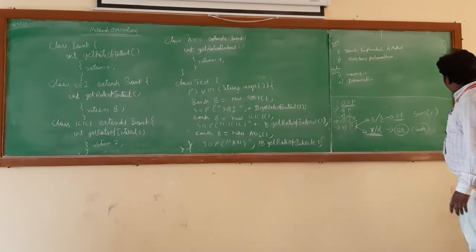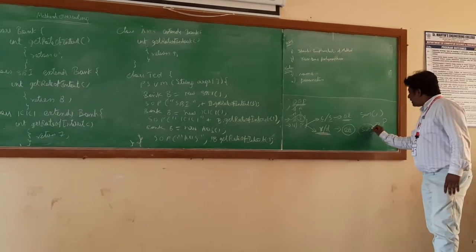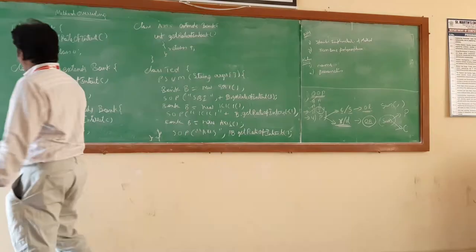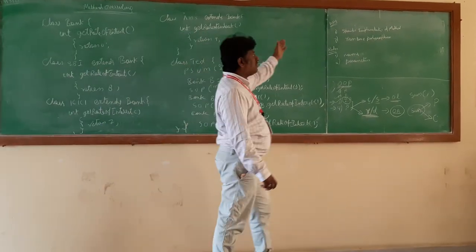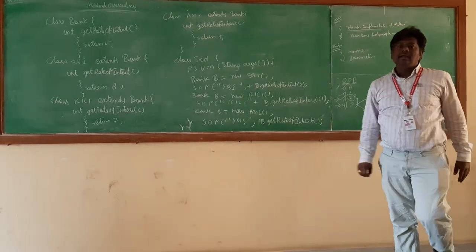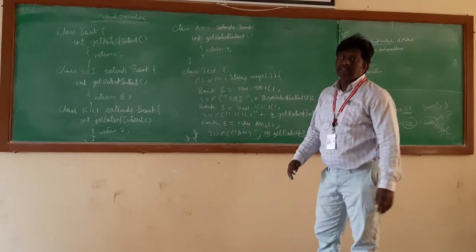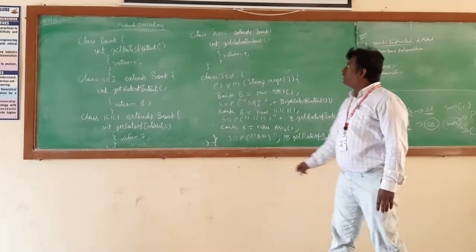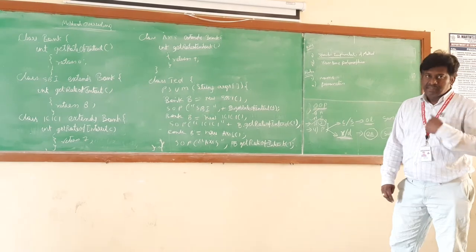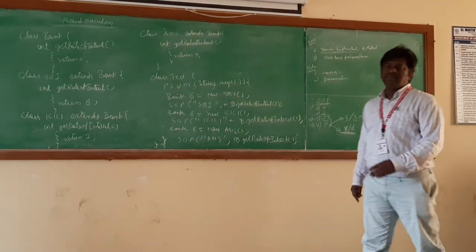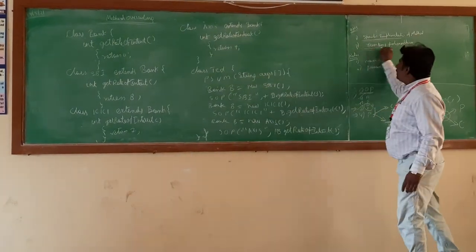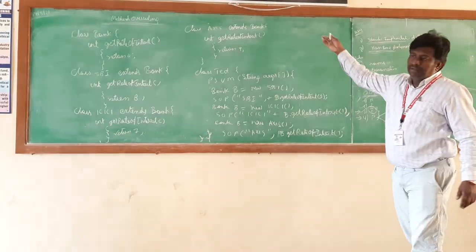One more important thing: one function must be in the parent class and the other function must be in the child class. That is the main necessity of overriding. The specific implementation of the method will be in the child class — one generic implementation in the parent class and a specific implementation in the child class. Generic is at the top level in the hierarchy, and specific is at the bottom level. These are the two main uses of the method overriding concept.